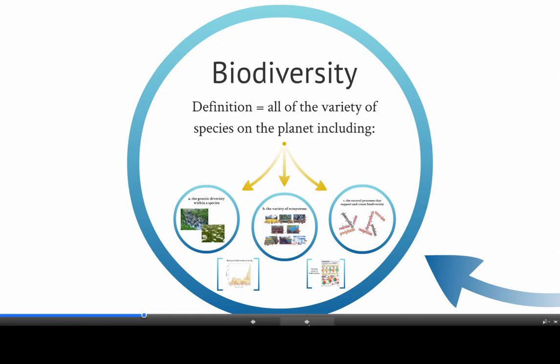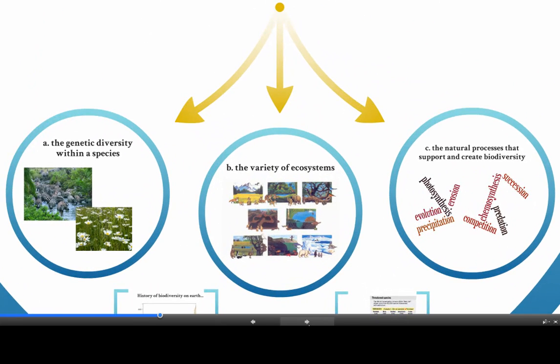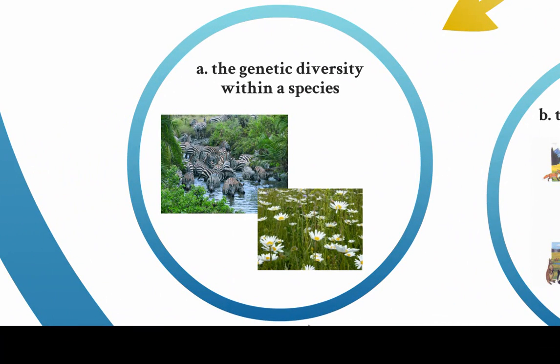Biodiversity is the term biologists use to describe all the variety of species that you find either in a particular area, or if you're talking about the entire planet, that 10 to 100 million species — that variety is biodiversity. But the term itself actually has more meaning than just the physical number of species. It also includes the genetic diversity within a species.